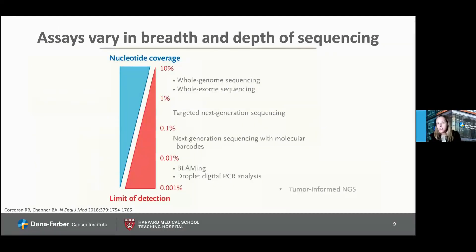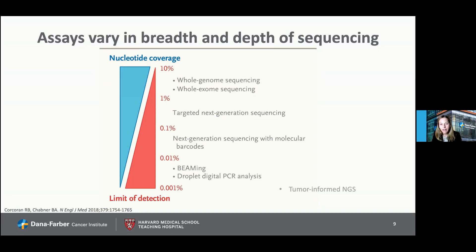Assays vary quite significantly in both the breadth and depth of sequencing. High nucleotide coverage — whole genome or whole exome sequencing — gives a lot of information about the cancer, but you can't go very deep, so if there's not much ctDNA around, you might not find it. At the other extreme, sequencing very deeply at a few loci gives more information about very rare pieces of DNA in the blood, and that's where these tests are working in early disease.